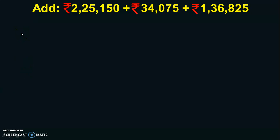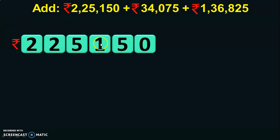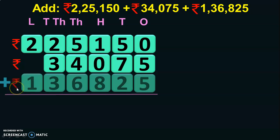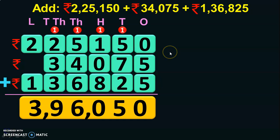You can have addition in rupees also, so let us see one such example. We have to add Rs. 2,25,150 plus Rs. 34,075 plus Rs. 1,36,825. The addition method remains the same. First write down the six-digit number and write down the place values, then write the five-digit number below and the other six-digit number. Now let us add directly: 0 plus 5 is 5, 5 plus 5 is 10 — 0, carry over 1. 1 plus 5 is 6, 6 plus 7 is 13, 13 plus 2 is 15 — 5, carry over 1.